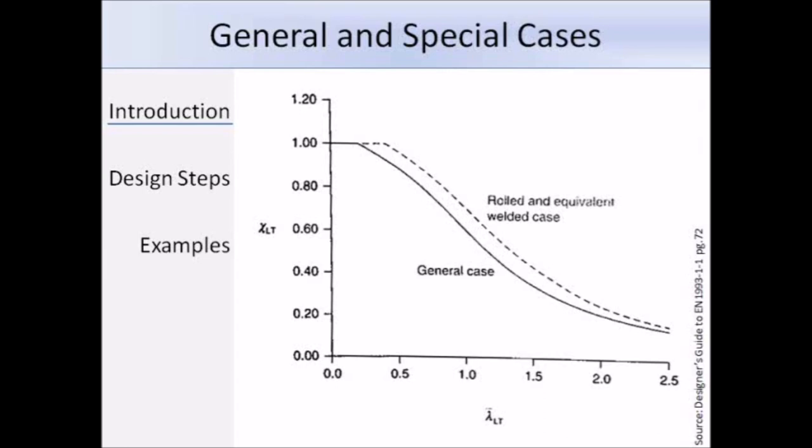This graph shows the difference in buckling curves between general and special cases for buckling curve B, and as you can see, the special case for rolled sections is more favorable. You will also notice that the plateau length has increased, therefore the use of the special case can provide significant increase in LTB resistance compared to using the general case. And you should also note that this graph is for comparison purposes only because Eurocode 3 does not give the graphs for the buckling curves.